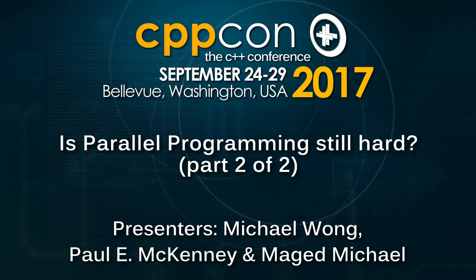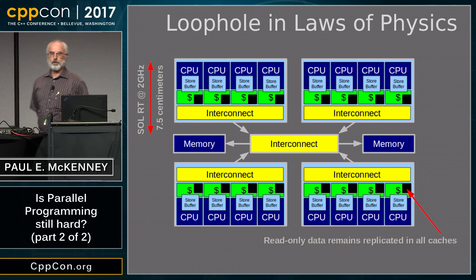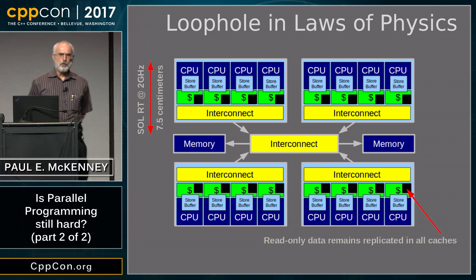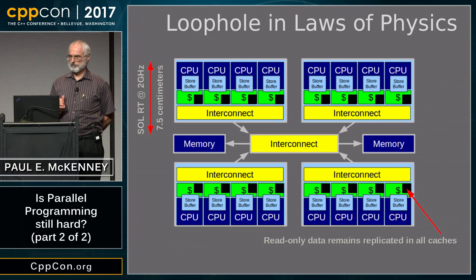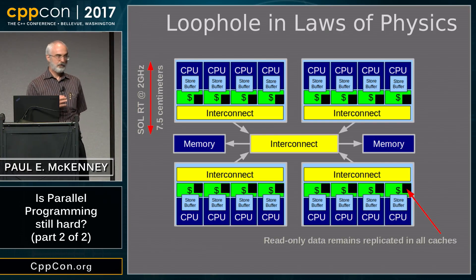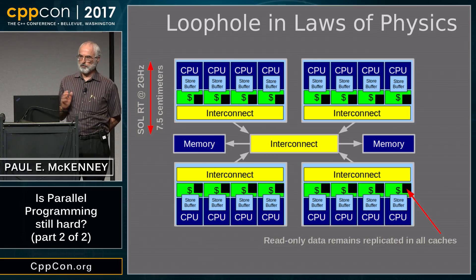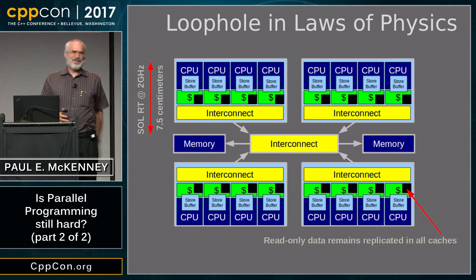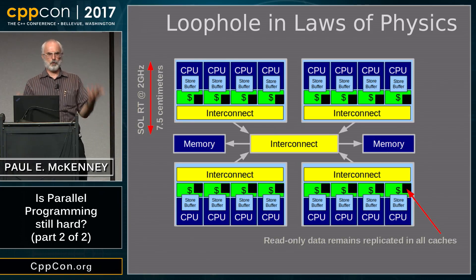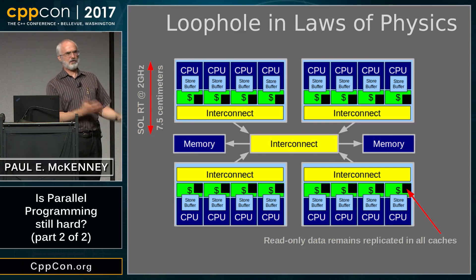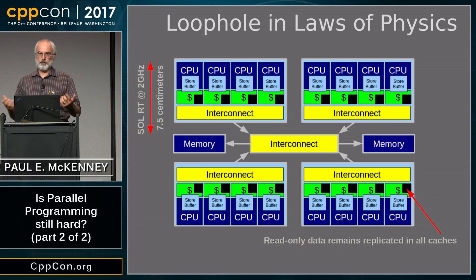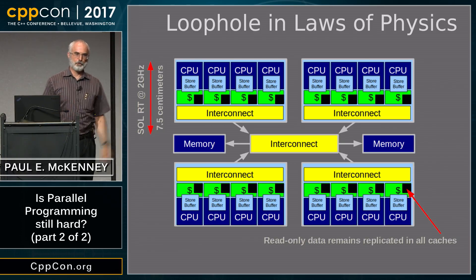We've talked a lot about laws of physics and how they're inconvenient for hardware people and thus inconvenient for software people. But almost all laws have loopholes, and the laws of physics are no exception. There are some loopholes we take advantage of in some cases. Like loopholes in normal legal laws, there are limits to these, but we should take full advantage of them wherever we can. So let's go through some of them.